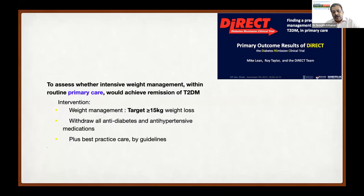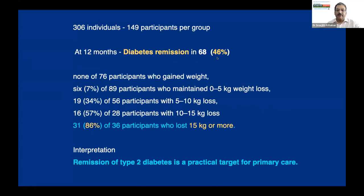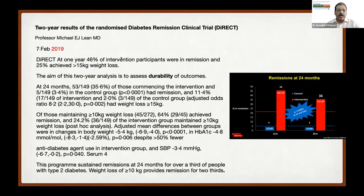The path-breaking DiRECT trial — the Diabetes Remission Clinical Trial — presented at the International Diabetes Federation in 2017 was pivotal. It tested whether diabetes can undergo remission across 49 primary care centers by giving a food plan of 800 calories and trying to achieve weight loss. Diabetes remission was possible at 12 months: 46% of patients in the intervention arm did not require any drug to control their diabetes. If they had lost more than 15 kilograms, 86% did not require any drug. They concluded that remission of type 2 diabetes is a practical target for diabetes care.